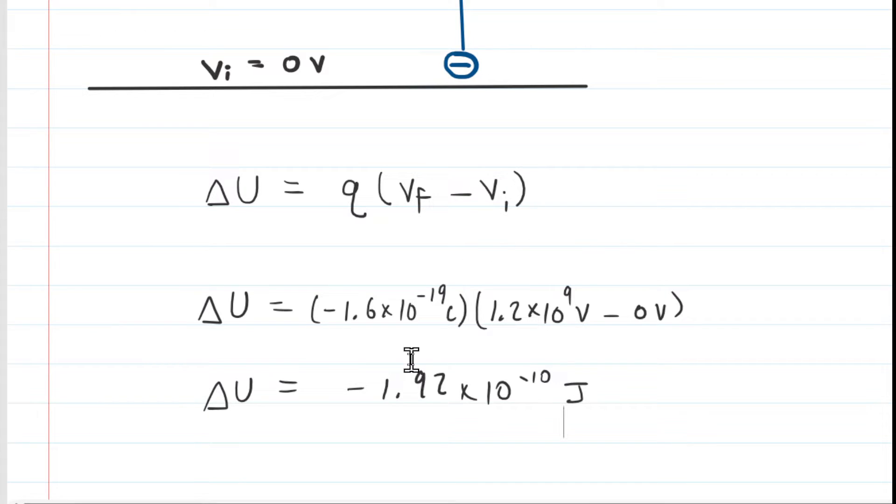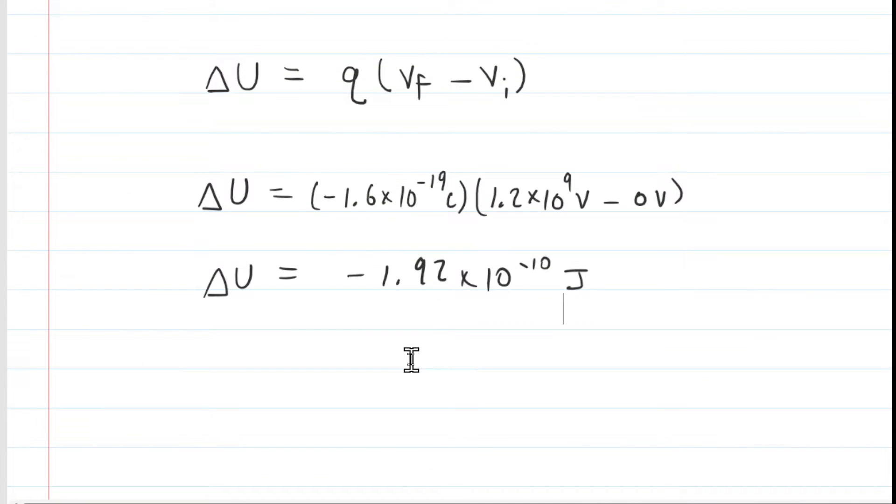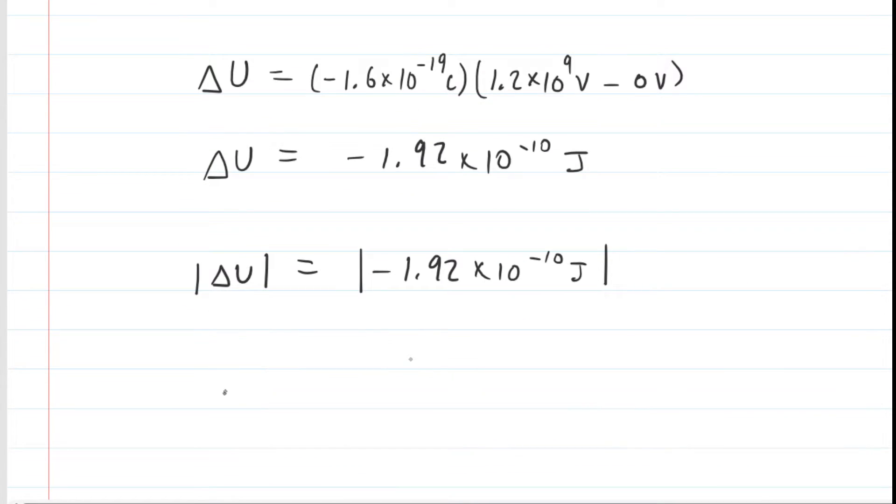A couple of things to note. The question wanted the magnitude of the change in the electric potential energy. So we're going to take the absolute value of both sides of the equation in order to get the magnitude. That makes the magnitude of the change in electric potential energy equal to positive 1.92 times 10 to the minus 10 joules.